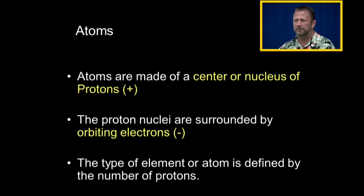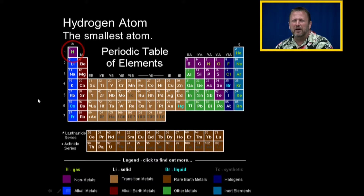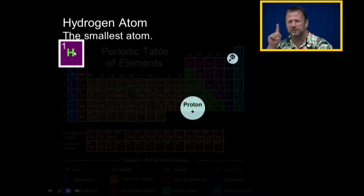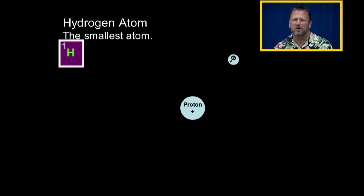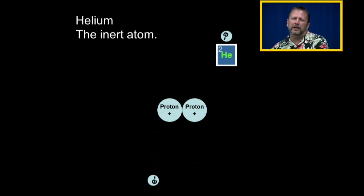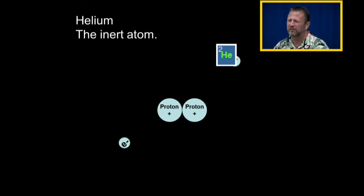Looking at the periodic table, hydrogen is number one because it has one proton, and that one proton supports one electron. Helium is number two — it has two protons in the center, so it supports two electrons. Helium is called an inert atom. Protons are positively charged, electrons are negatively charged, and this balance becomes more important when we talk about ions and charges.